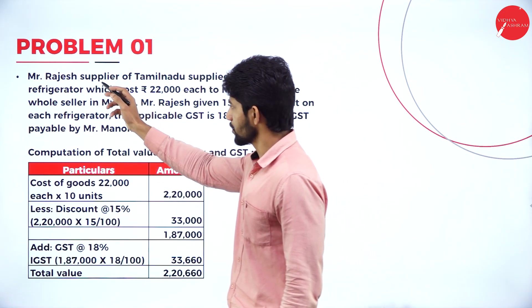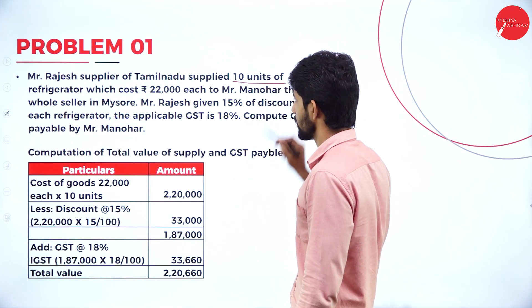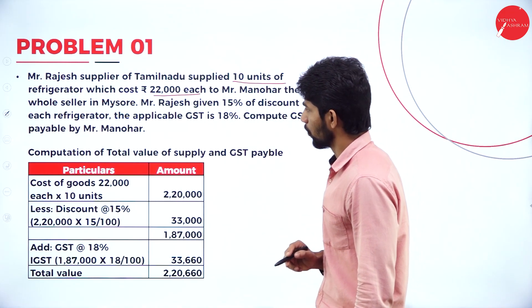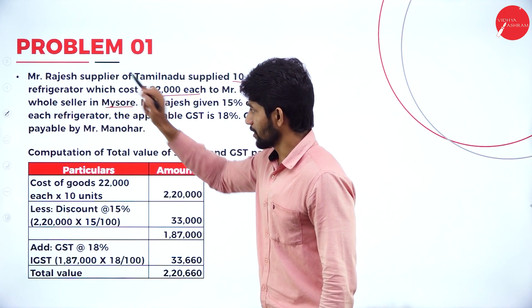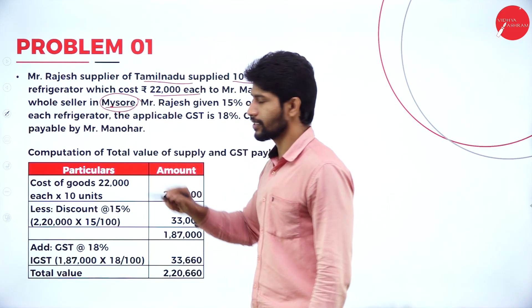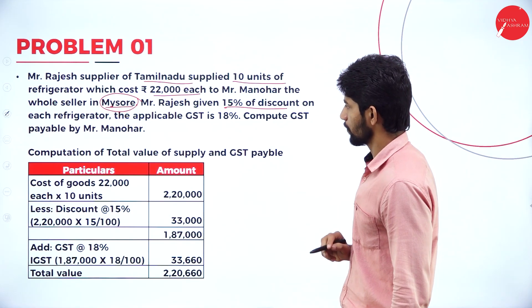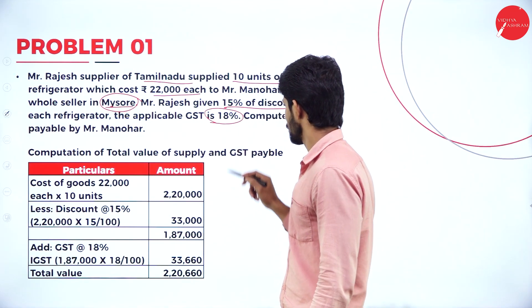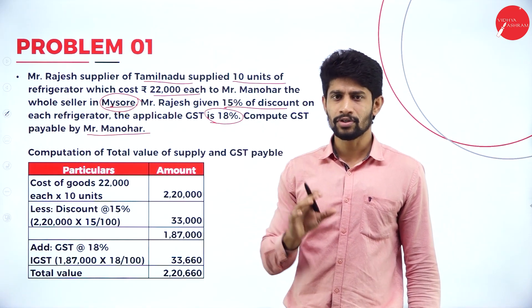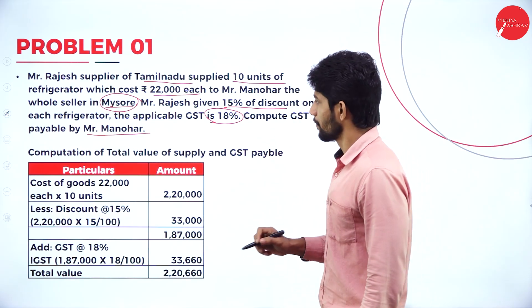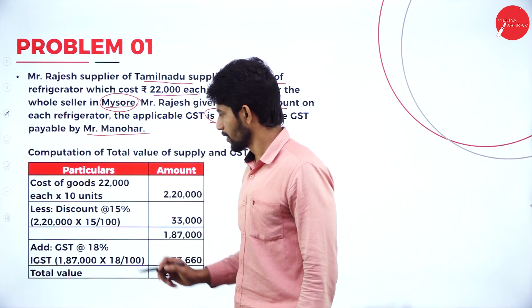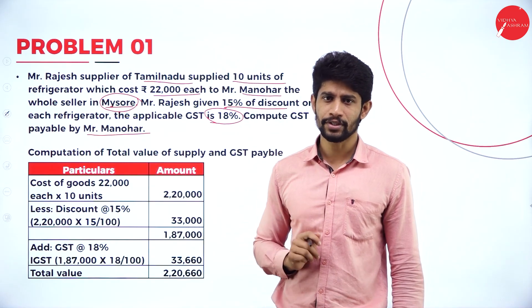The first problem: Mr. Rajesh, supplier of Tamil Nadu, supplied 10 units of refrigerator which cost 22,000 each to Mr. Manohar, the wholesaler in Mysore. Here Rajesh the supplier is in Tamil Nadu and the recipient, that is the buyer, is in Mysore. Mr. Rajesh gave a 15% discount on each refrigerator and the applicable GST is 18%. Compute GST payable by Mr. Manohar.